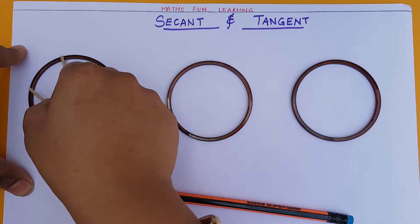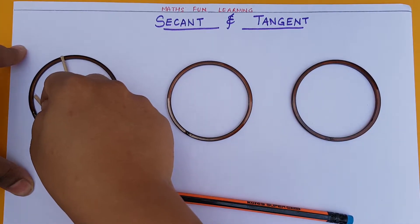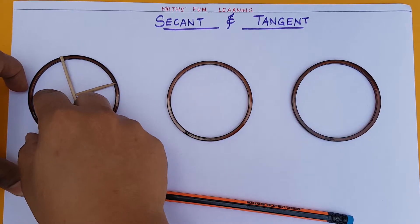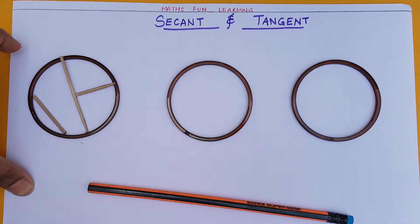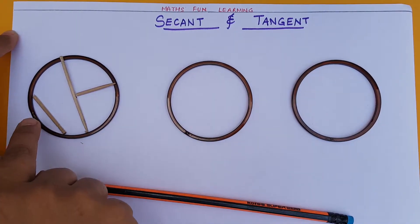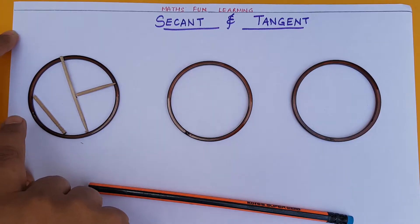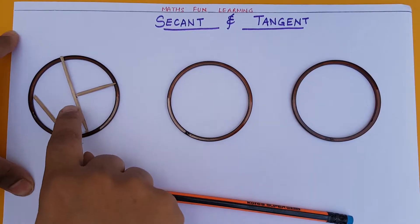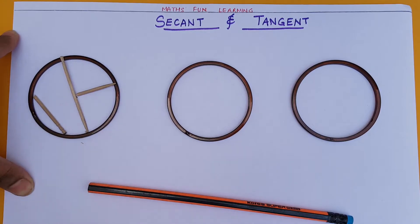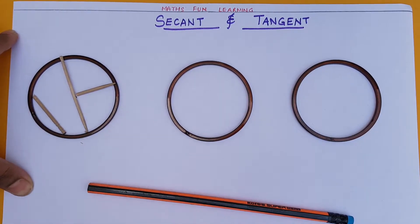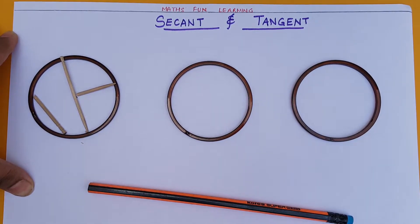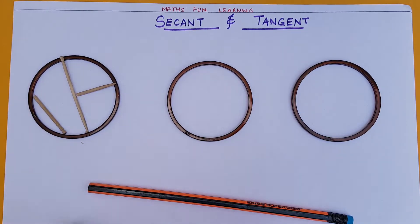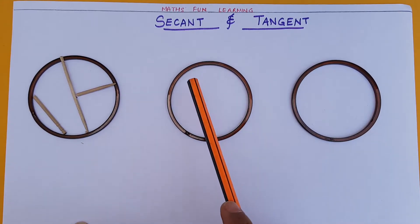Now you will learn one more line segment inside the circle — that is chord. What is chord? The line segment which joins the boundary but never goes through the center point is called a chord. I hope that is clear to you.